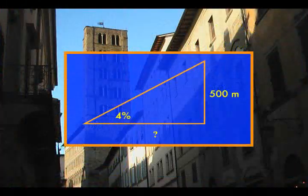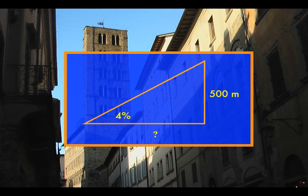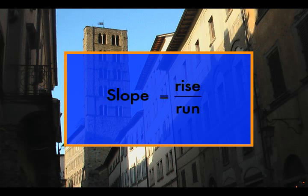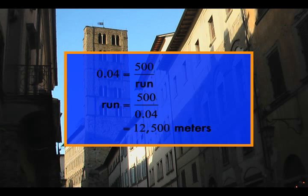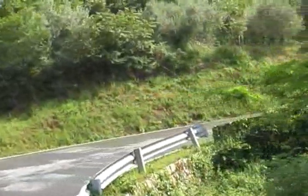You'll see that the grade is the same as the slope expressed as a percent. The 500 meter rise to Cortona is at a 4% grade. How far do these bikers have to travel? We can use the slope formula to solve this problem. A 4% grade is the same as a slope of 0.04. The rise is 500 meters, so we need to solve for the run. The distance the cyclists need to travel is 12,500 meters, made up of a long spiraling road up to Cortona.